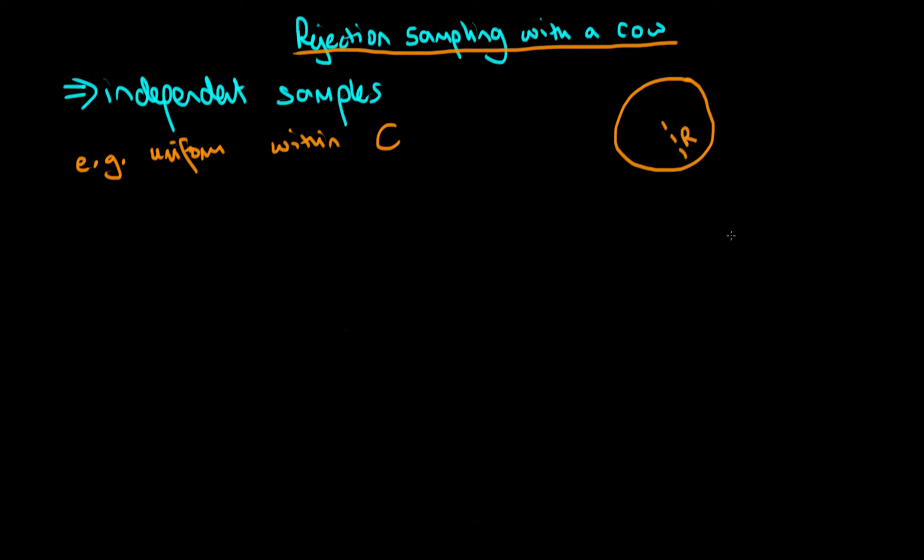We can write down what the pdf looks like. If we imagine we've got an x coordinate and a y coordinate, then the pdf is equal to zero if the radial distance of that point from the origin is greater than r, and it's equal to 1 over pi r squared if otherwise.